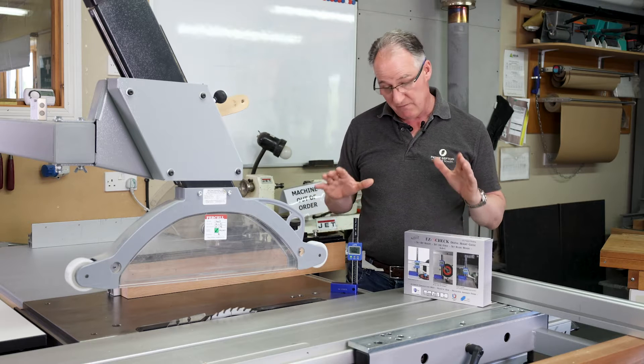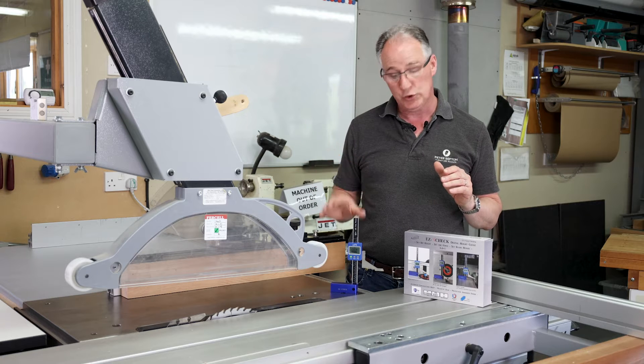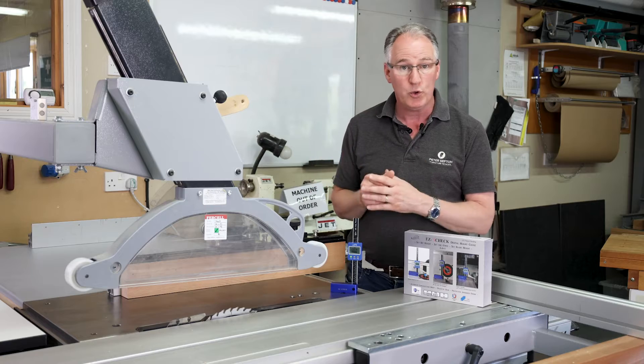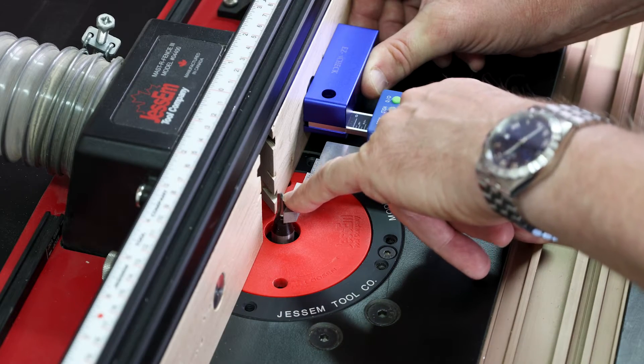iGaging's Easy Check is very good for around the workshop, setting up your machines for height and also width or position of your cutters, or getting the centerline on router tables.